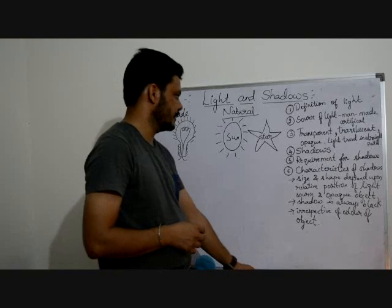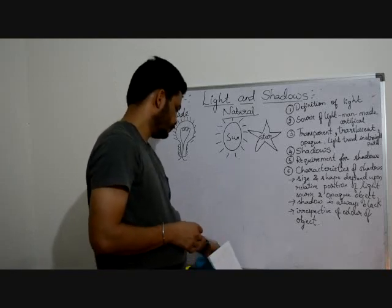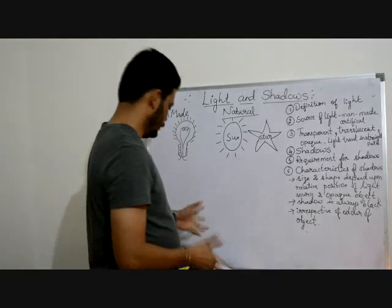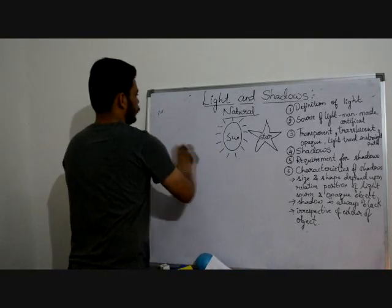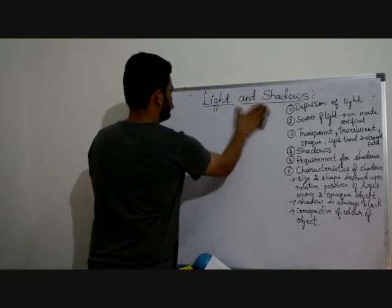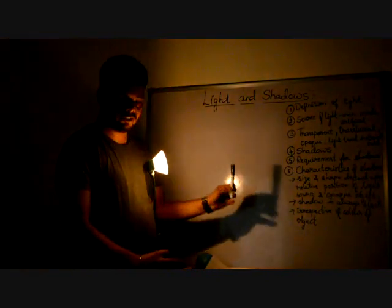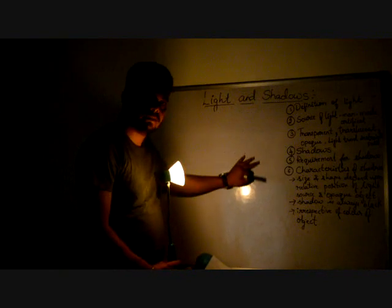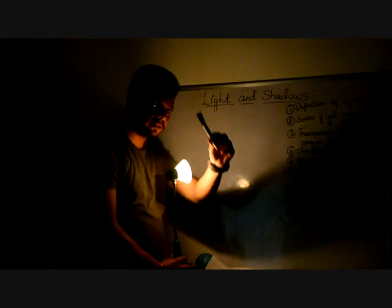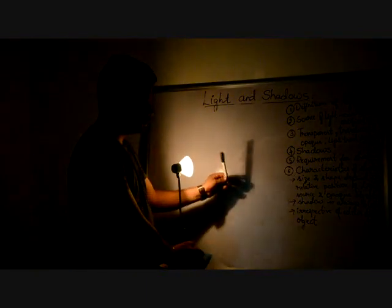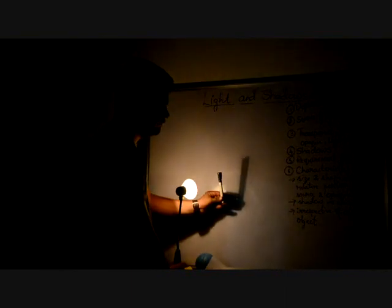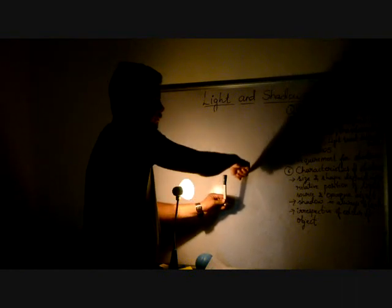Next we want to discuss shadows. For a shadow, you need three things: a light source, a screen — this whiteboard is acting as a screen — and an opaque object. When the opaque object comes in the path of light, the shadow is formed over there. It makes some black regions, and these black patches or regions are known as shadows.